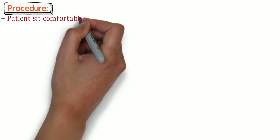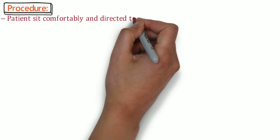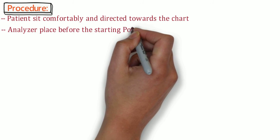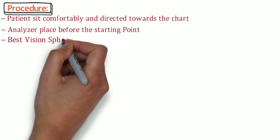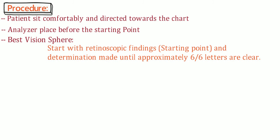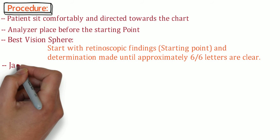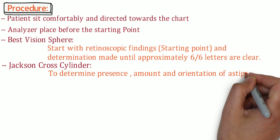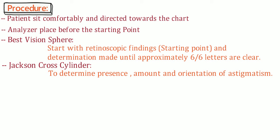Now let's study about the procedure. The patient sits comfortably and is directed towards the chart. The analyzer is placed before the starting point. Best vision sphere starts with retinoscopic findings as the starting point, and determination is made until approximately 6/6 letters are clear. Then Jackson cross cylinder is used to determine the presence, amount, and orientation of astigmatism.